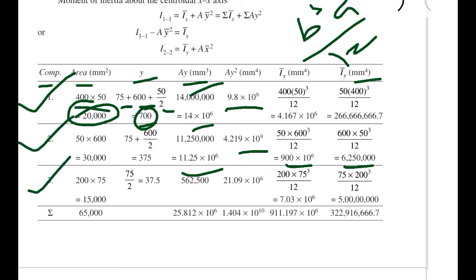For the third component, the area is 200 × 75 = 15,000 mm². The centroidal distance is 75/2 = 37.5 mm. We multiply area by y to get Ay, and area by y² to get Ay², obtaining all values for this component.